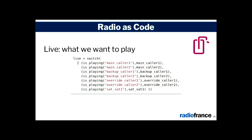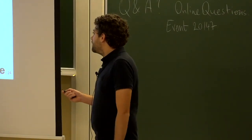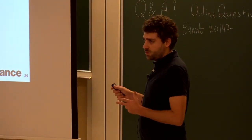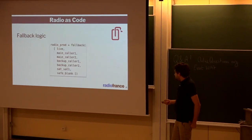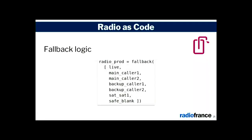We need logic to switch between sources, so we use LiquidSoap's native switch function. Our function is a Boolean called 'is_playing' — we just tell it whether this source has to play, and only one can be true at a time. We also need fallback logic — what happens if the source we want to play is down? We use the fallback operator of LiquidSoap: it first takes the live source we want to play, but if that's unavailable, the fallback operator takes the list in order, ending with the safe blank. So this never fails.